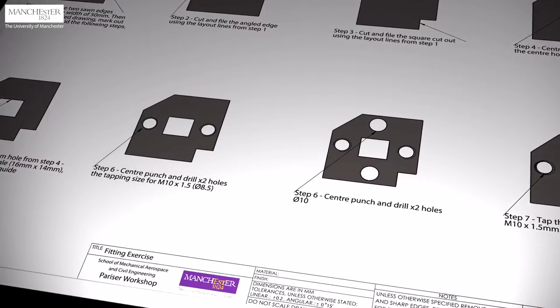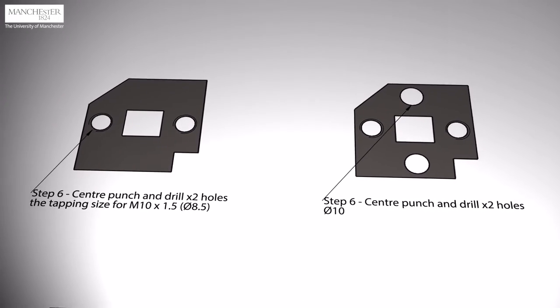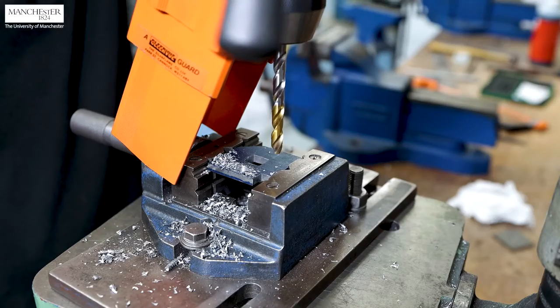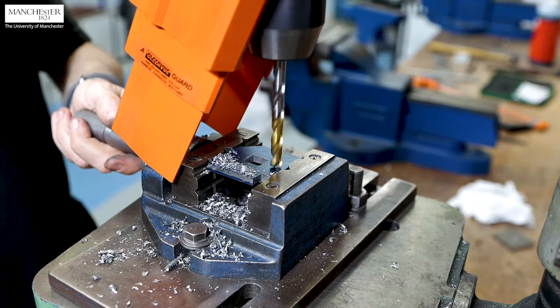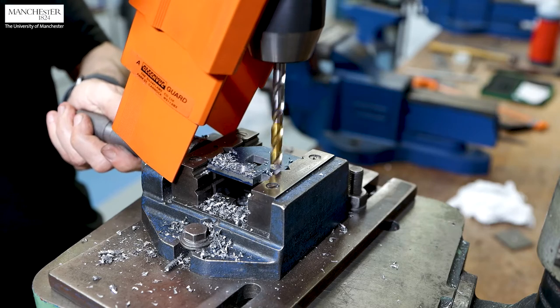The next stage is to get the final part by opening the remaining two clearance holes and the two tapped holes. As per the part drawing, we will drill the remaining four holes. Remember to clamp the vise to the drill table.